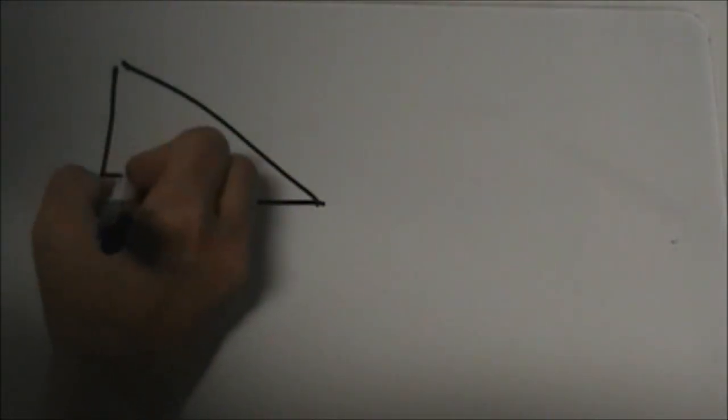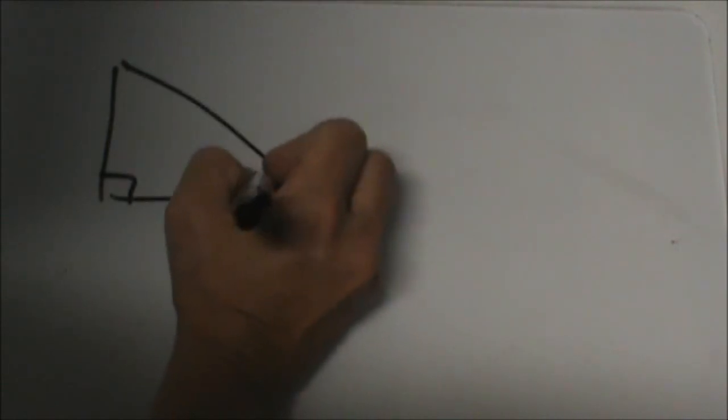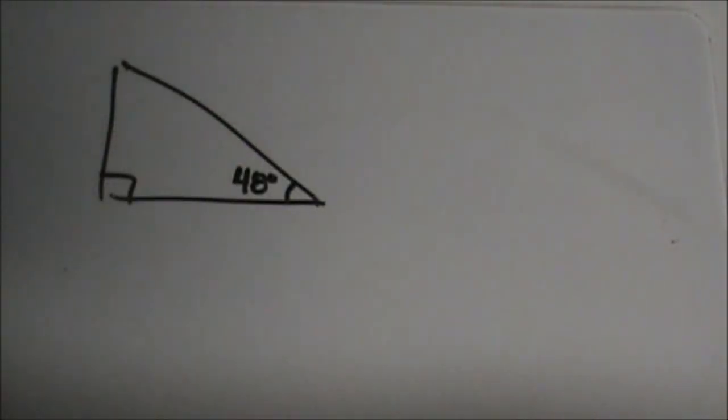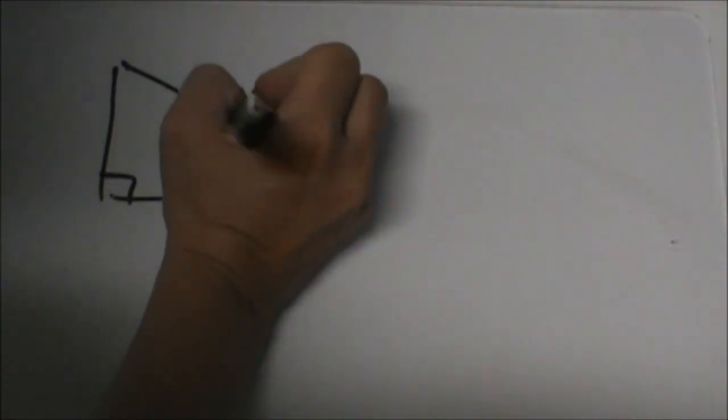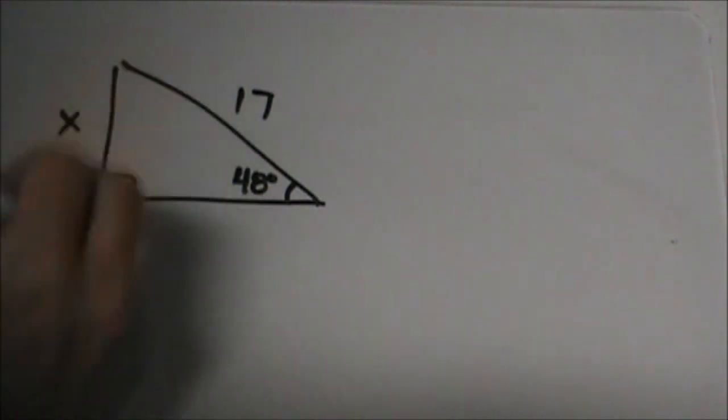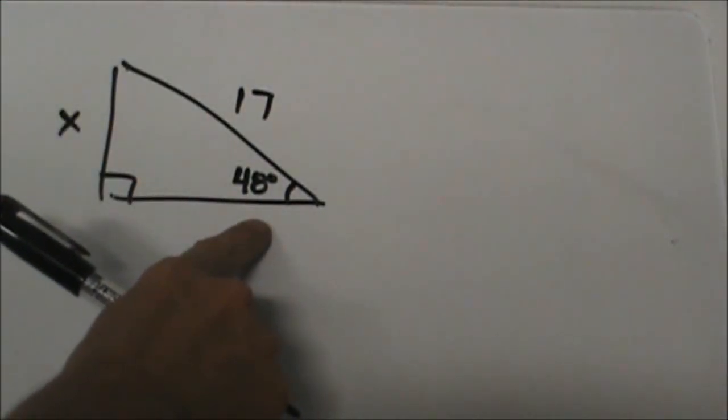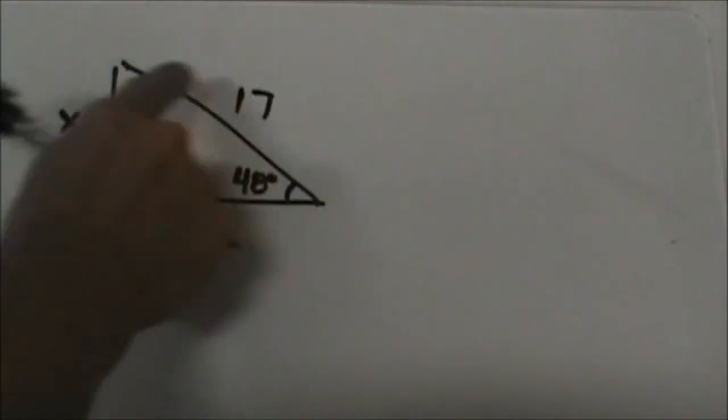Here is our right triangle. We have a 48 degree angle here, so that is our reference angle. We have 17 on this side and x on this side. So from this reference angle, which two sides are we dealing with? These two.